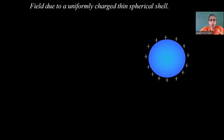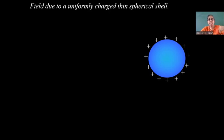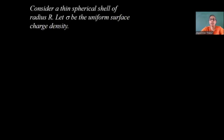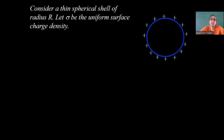When we are drawing on paper, we don't draw it as a sphere — we draw the cross-sectional area always. So, we will always draw a spherical shell as a circle. Let us consider a thin spherical shell of radius R (capital R). And let sigma be the uniform surface charge density. This is the thin spherical shell which is charged, with radius R from the center.